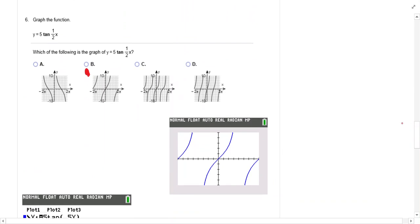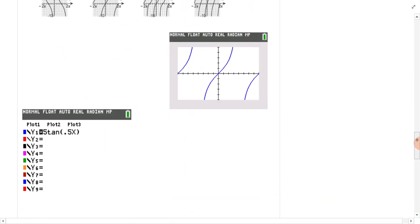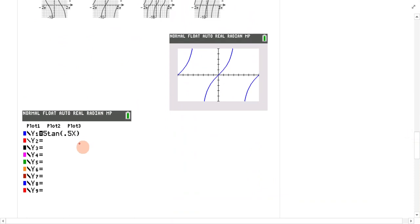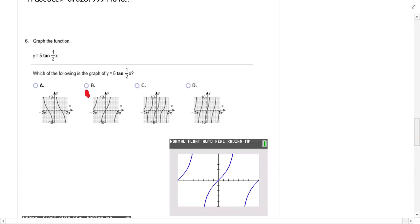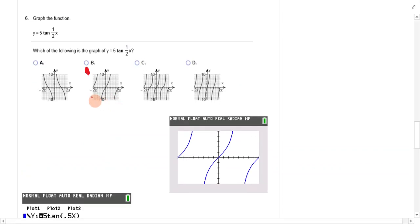5 tan 1/2 x. I would suggest that you could just put it in at 0.5 x. I did it negative 2 pi to 2 pi and you get a pretty good match there.